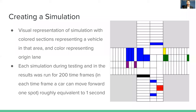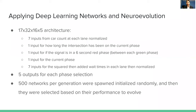Each simulation was run for 200 time frames, where each time frame is roughly equivalent to one second. For the neural network architecture, each network had 17 inputs fully connected to a hidden layer of 32 nodes, fully connected to another hidden layer of 16 nodes, and fully connected to a 5-node output. Seven of the 17 inputs came from the car count in each lane normalized; 1 input for how long the intersection has been on the current phase; 1 input for whether the signal is in a red or yellow phase; 1 input for the current phase; and 7 inputs for the square-root-summed wait times in each lane normalized. The 5 outputs correspond directly with the 5 possible phases, and 500 networks evolved per generation.